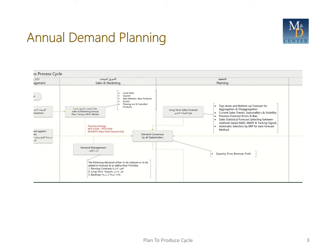Planning will then produce a long-term sales forecast, either top-down or bottom-up. Top-down means forecasting for groups of products and breaking them down into individual products according to certain ratios. Bottom-up means forecasting at the product level and then aggregating into families. We need to define current sales trends, seasonality, and volatility, and for evaluation we need to know the previous forecast error and bias in the fiscal forecast.